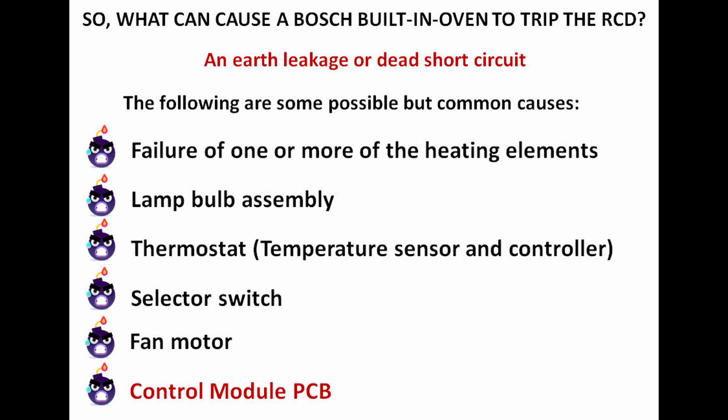What can cause a Bosch built-in oven to trip the RCD? It's probably an earth leakage or a dead short circuit. Possible causes include failure of one or more heating elements — I checked all of those and they were fine. The lamp bulb assembly — I've changed that. The thermostat or temperature sensor — I checked and replaced that. Apart from replacing all three, the oven still tripped. It could be the fan motor, but I tested that and there was continuity. The only thing I did spot was the control module PCB.